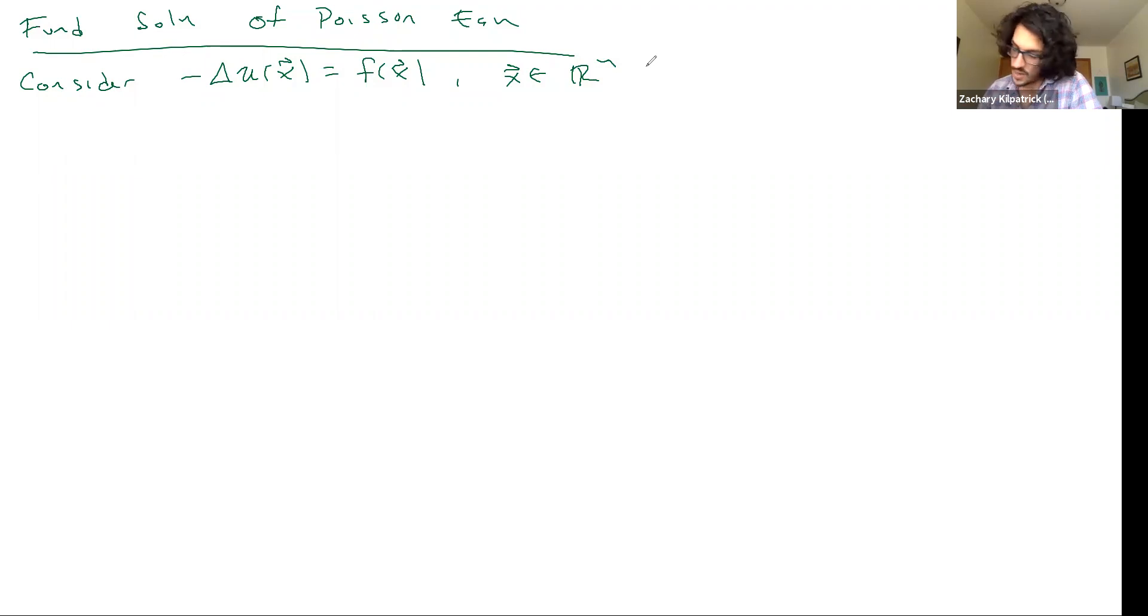We're still going to work on the unbounded domain, and we're going to assume essentially that F is in the set C₀², which is C²(Rⁿ) with compact support so that when we integrate the fundamental solution against it, it doesn't blow up. I'm going to call this equation star, and then I'm going to write a theorem.